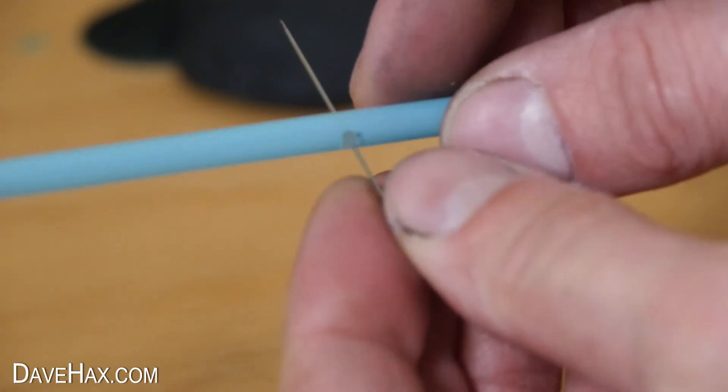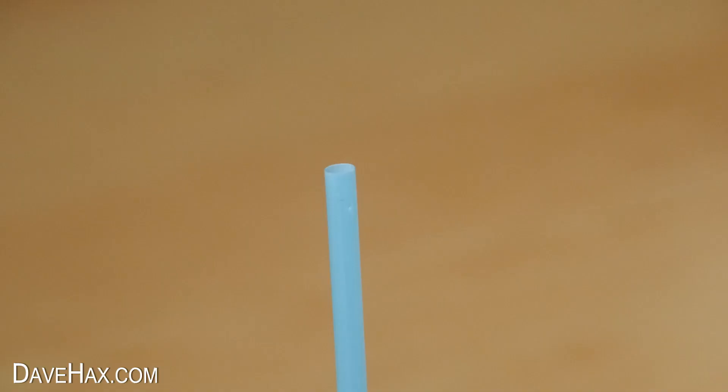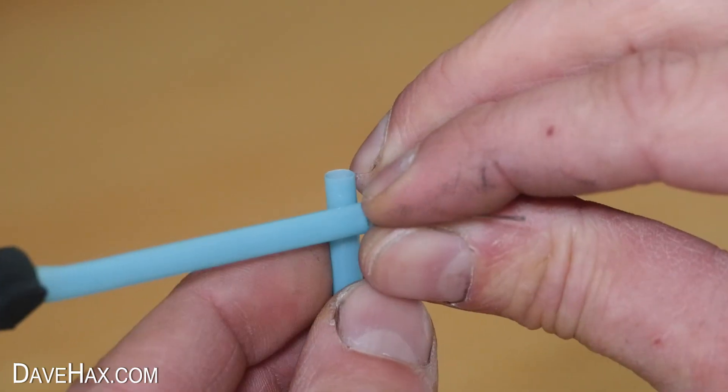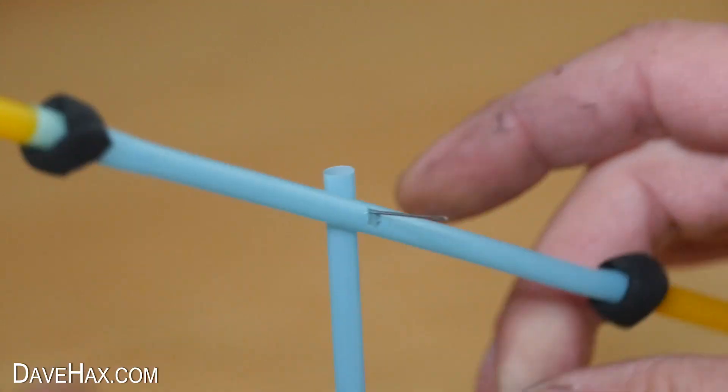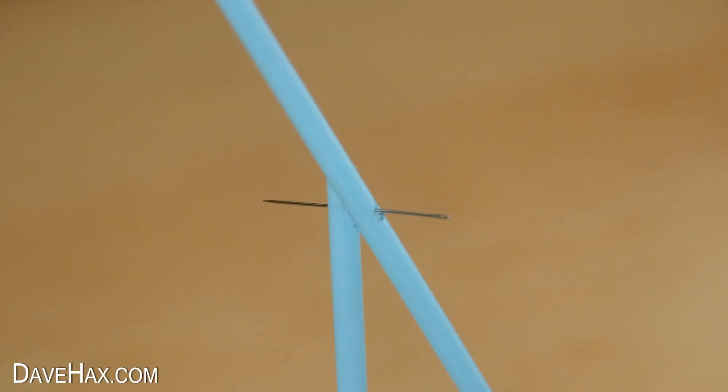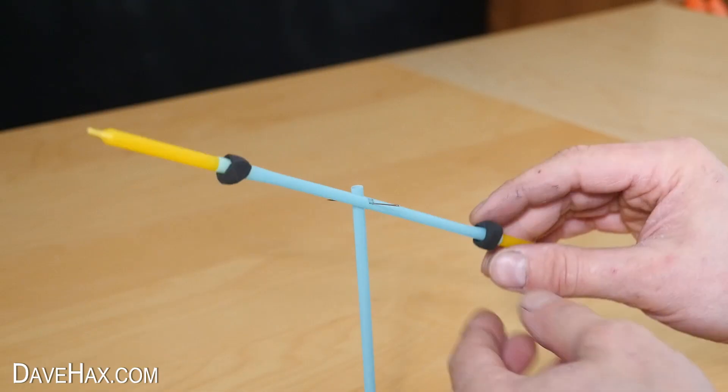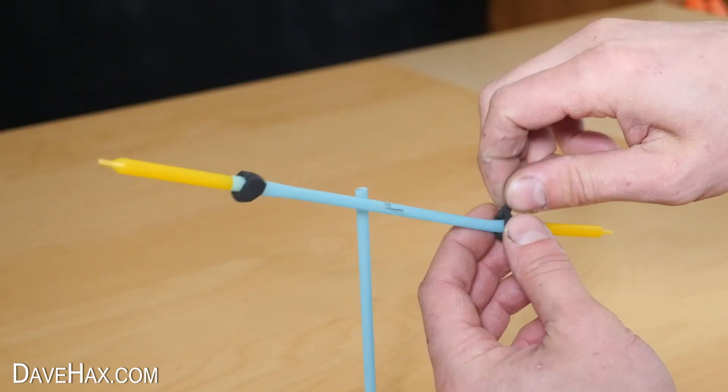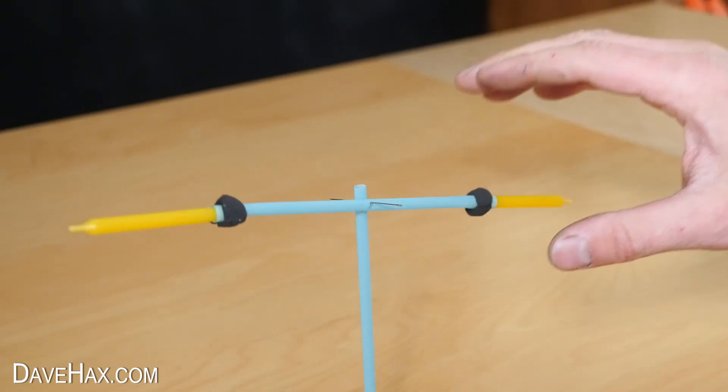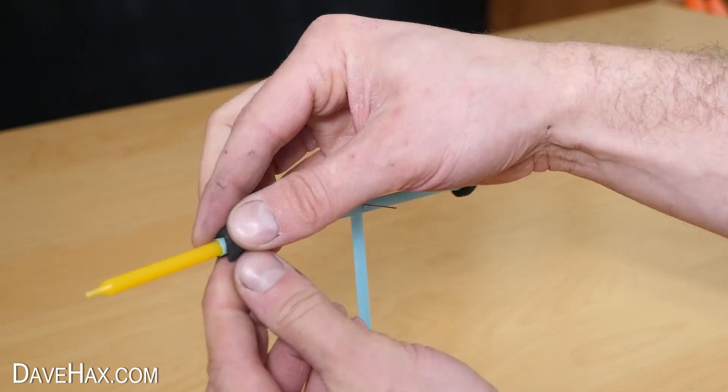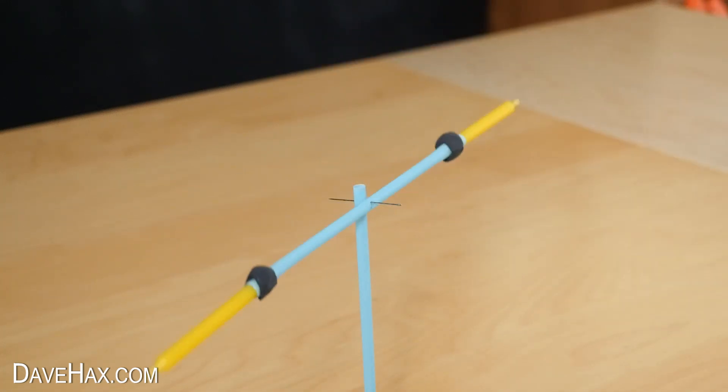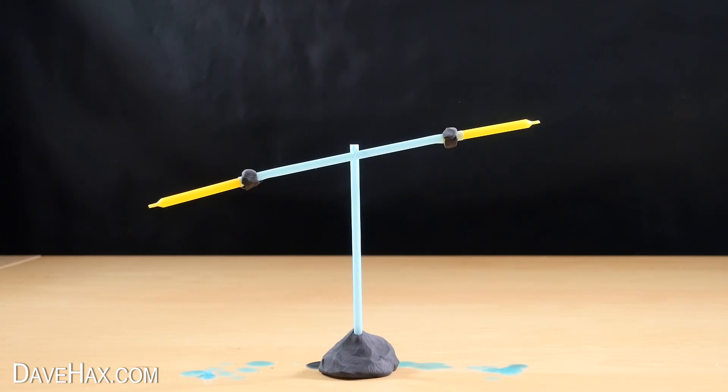I slid the needle through the larger hole and pinned it to the straw. This time you can see it had a lot freer movement. It spins a lot easier. I balanced it up by removing plasticine, then lit the candles.